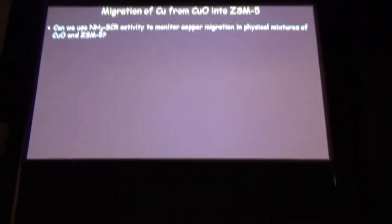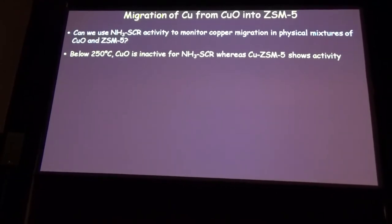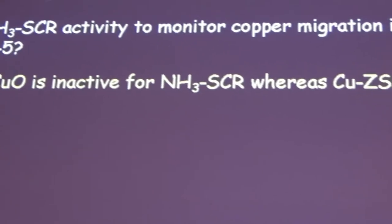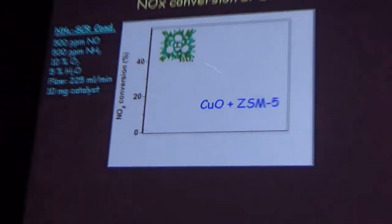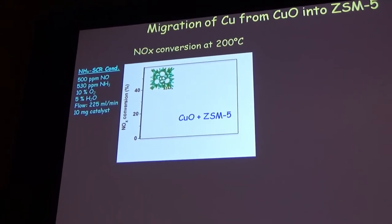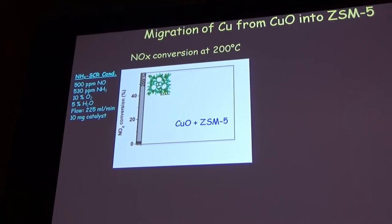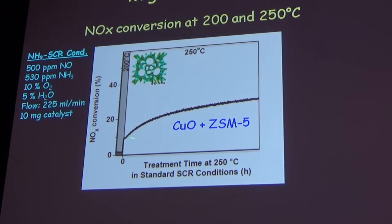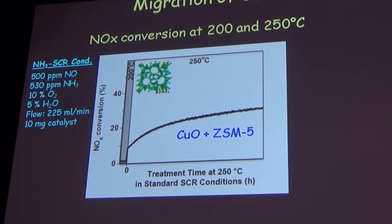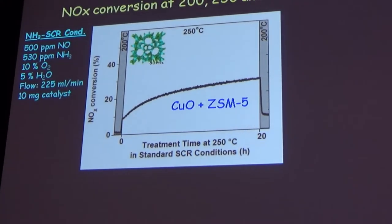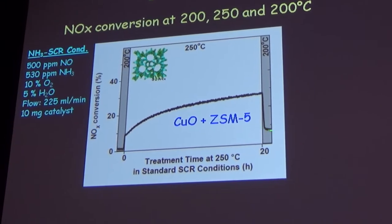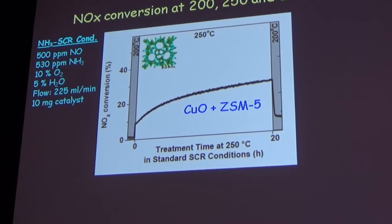Can we use SCO activity to monitor copper migration, starting from physical mixtures of copper oxide and ZSM-5? Below about 250 degrees Celsius, copper oxide is inactive for ammonia SCO, but copper ZSM-5 shows some activity. We start with a physical mixture of copper oxide and ZSM-5, expose it to ammonia SCO conditions at 200 degrees Celsius, and see almost no activity. Then we raise the temperature by just 50 degrees Celsius and see an immediate rise in conversion. More interestingly, by time of exposure we see a gradual increase in conversion—we have continuously increasing activity.